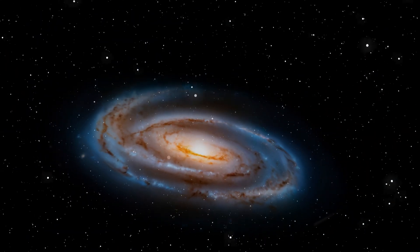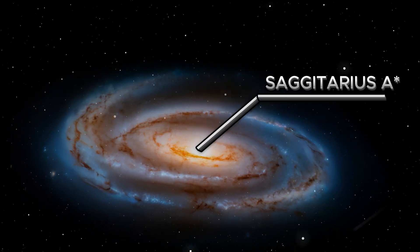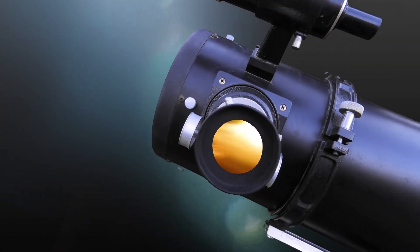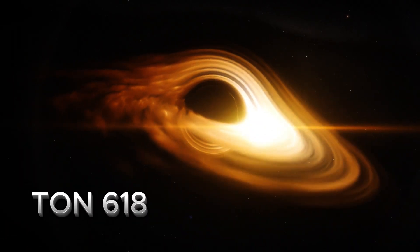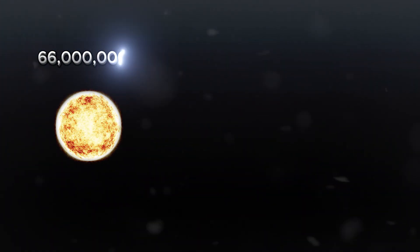The Milky Way has Sagittarius A star, a black hole about 4 million times the mass of the Sun. Some galaxies host even bigger ones, like Tian 618, which is 66 billion times the Sun's mass.